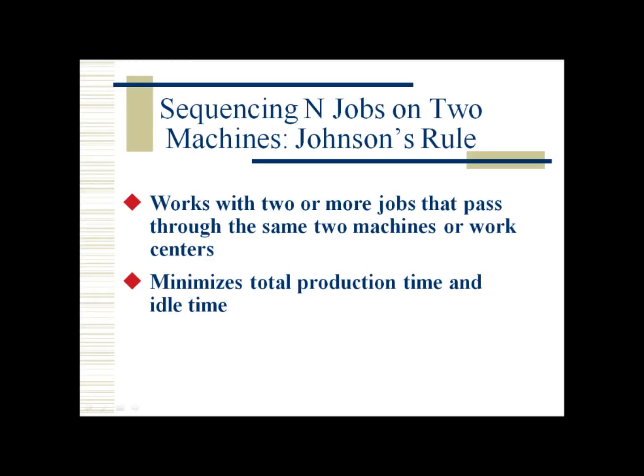Hi guys, so for our discussion today we have Johnson's Rule — the algorithm in sequencing two or more jobs that pass through the same two machines or work centers. This algorithm minimizes the total production time and the idle time.